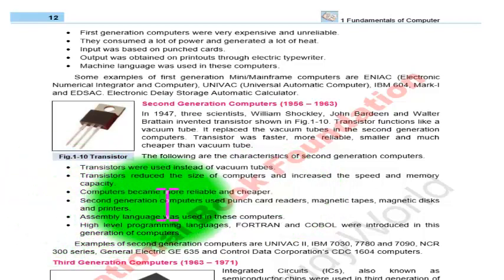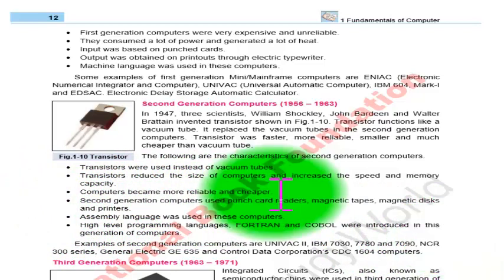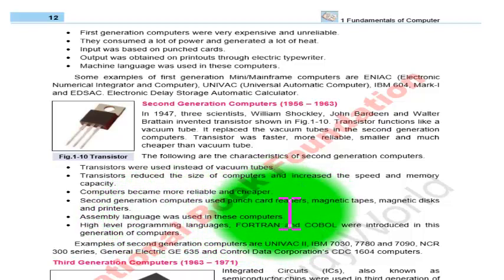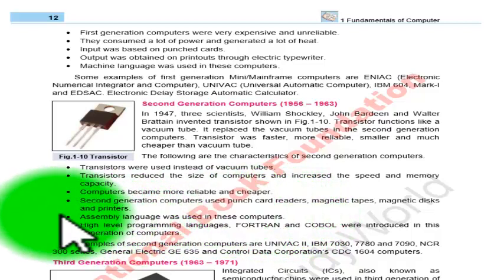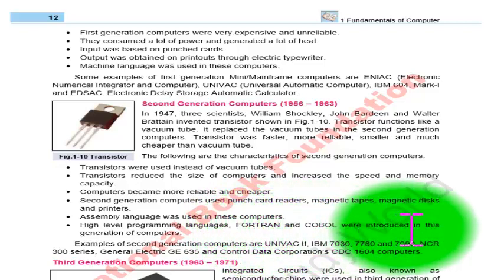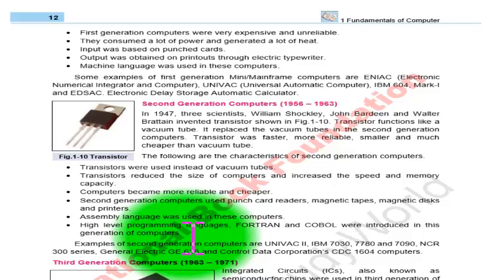Second generation computers used punch card readers, magnetic tapes, and printers. Assembly language was used in these computers, whereas machine language had been used in first generation computers. High-level programming languages such as Fortran and COBOL were also introduced in this generation of computers.